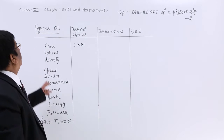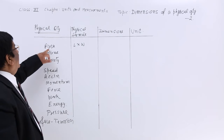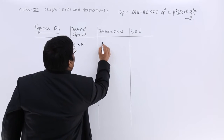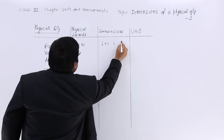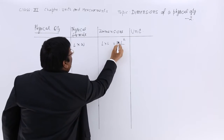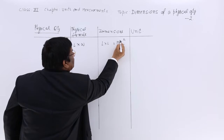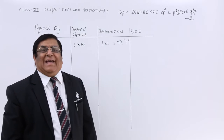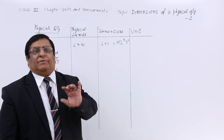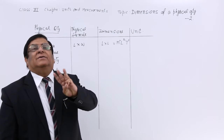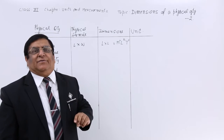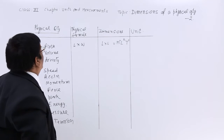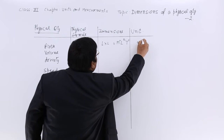Here we make a chart of certain physical quantities which are very common. One is area. Area has a physical formula length into width. So dimensions will be L and L, that is L². Mass is not involved so we write M⁰. Time is not involved so we write T⁰. In mechanics, we put our formula mentioning three basic dimensions: mass, length, and time. The unit of area is meter square.